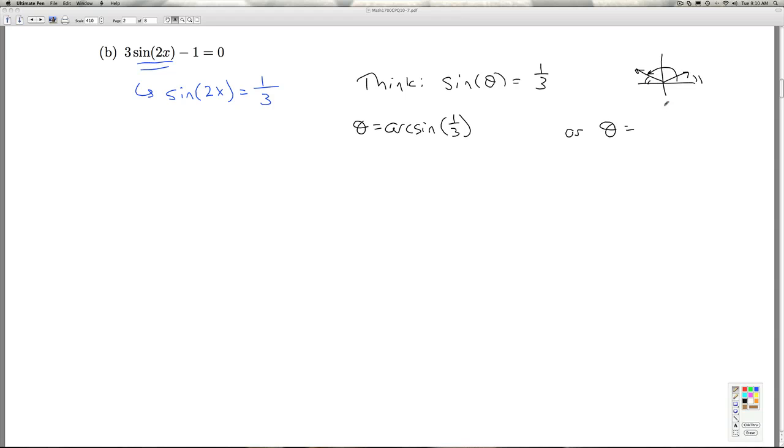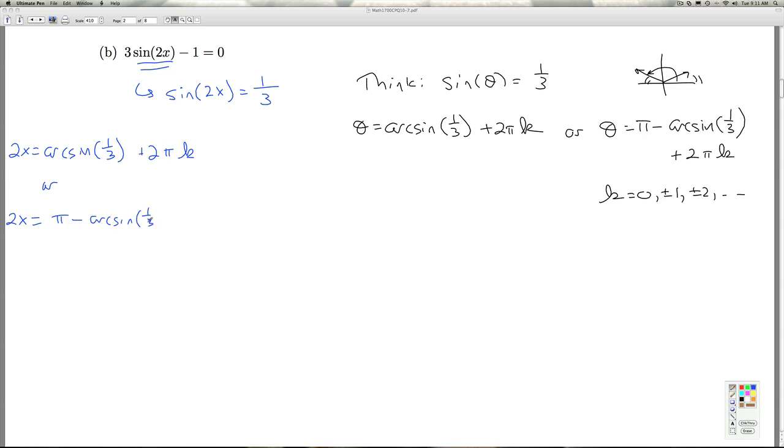And so the quadrant 2 would be pi minus that reference angle. And once again, to capture all the solutions, I've got to add multiples of 2 pi k for integers k. That captures all the coterminal angles. So back over here, I've got the sine of 2x equals 1 third. So that means that 2x is the arc sine of 1 third plus any integer multiple of 2 pi. Or, 2x is pi minus the arc sine of 1 third plus any integer multiple of 2 pi.